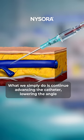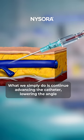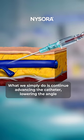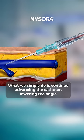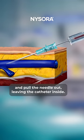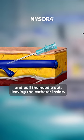What we simply do is continue advancing the catheter, lower the angle, and pull the needle out leaving the catheter inside.